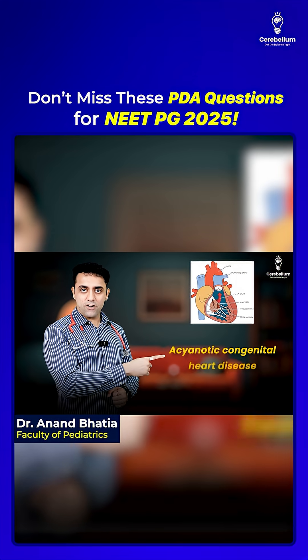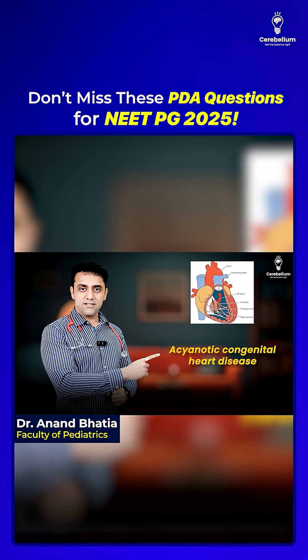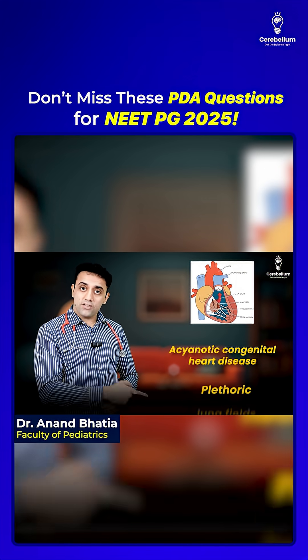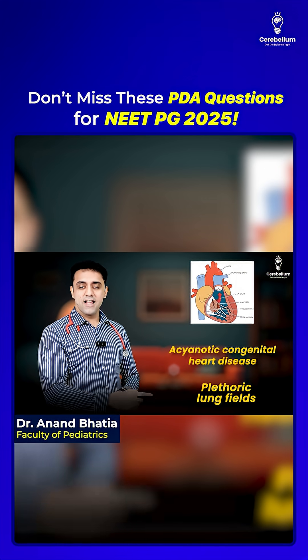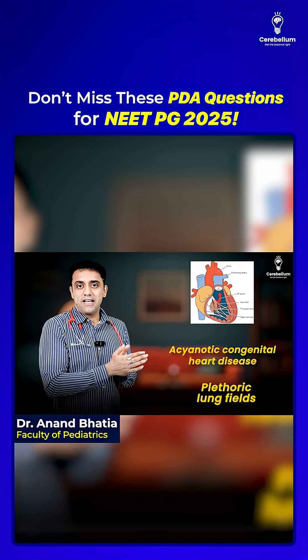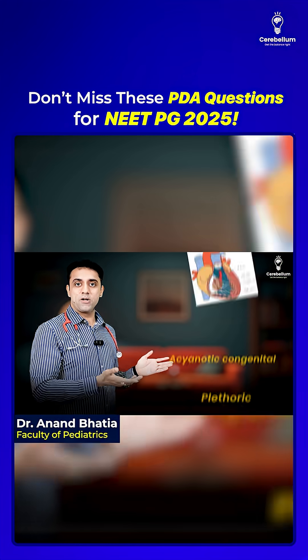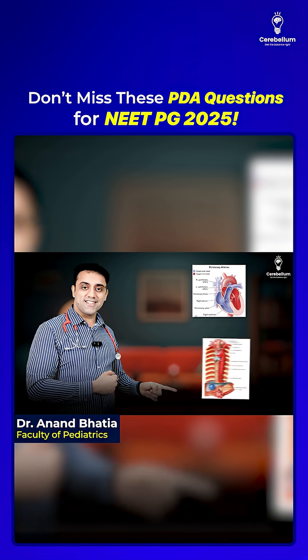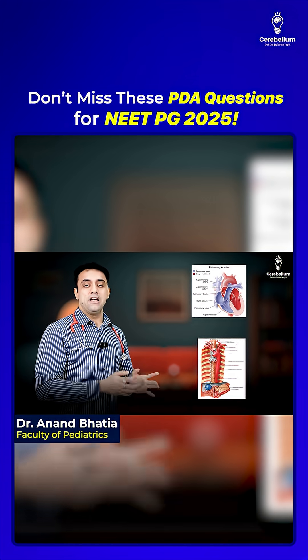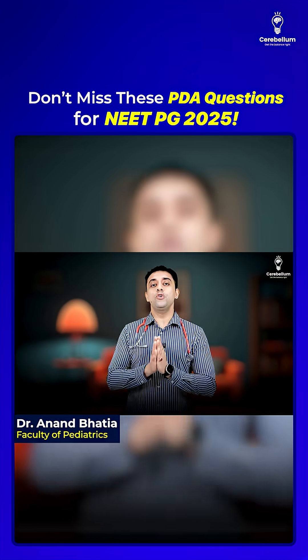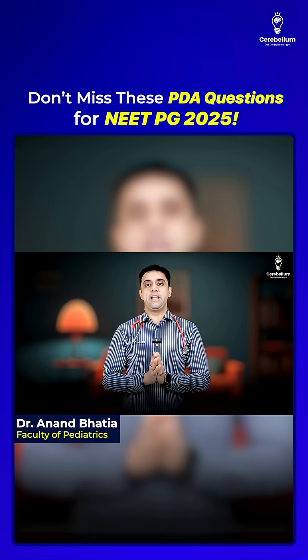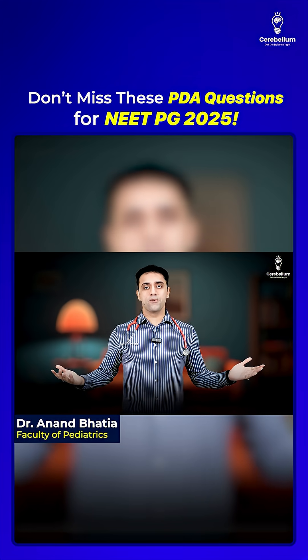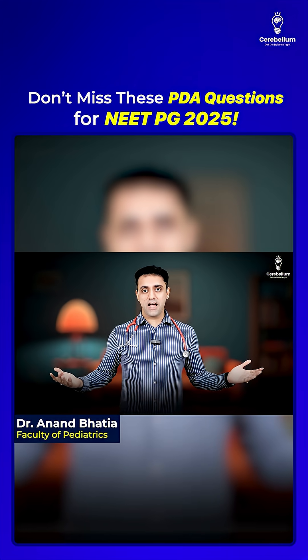Quick revision: Number one — PDA is a left-to-right shunt, an acyanotic congenital heart disease with plethoric lung fields. The connection in PDA is between the pulmonary artery and the descending aorta.